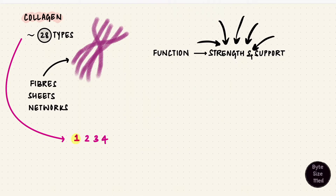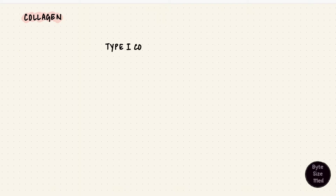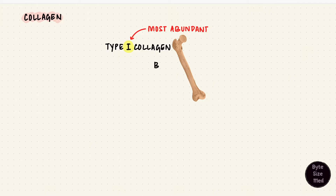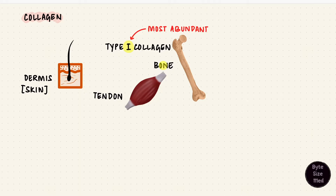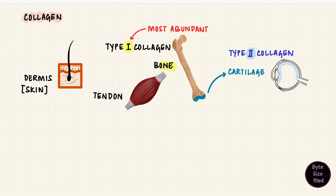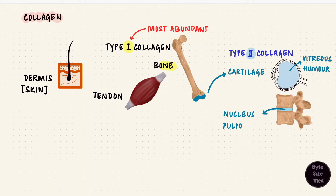We're expected to know some of the areas where those four types are located. The most abundant type is type 1 collagen. Some areas where you'd find type 1 collagen are bone, tendons, and the dermis of skin. Bone has a 1 in it — that's how everyone usually remembers it. Bone has type 1 collagen, and bone is usually followed everywhere by cartilage, so type 2 collagen is in cartilage. Two other areas with type 2 collagen would be the vitreous humor of the eye and the nucleus pulposus of the intervertebral disc.